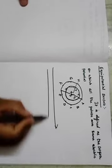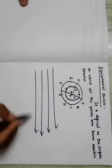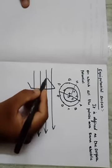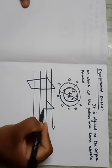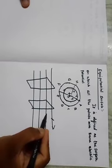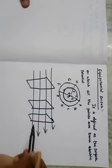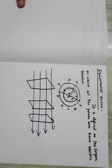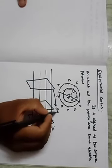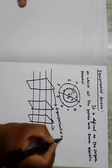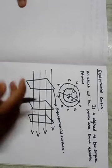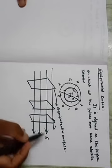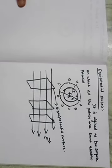For a uniform electric field, the equipotential surface forms a set of parallel surfaces. These surfaces are planes that are always normal to the electric field. You can see the diagram clearly given in your book.